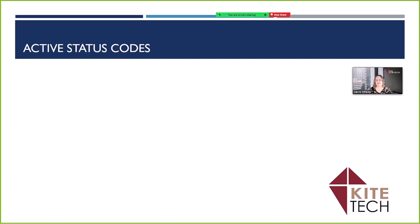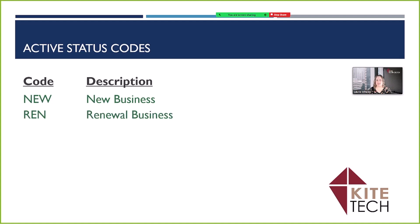Then we have our active policy statuses. Active policy statuses include NEW for new business, REN for renewal business, and REW for rewrite. This would be a rewrite of an expiring policy to a new carrier.